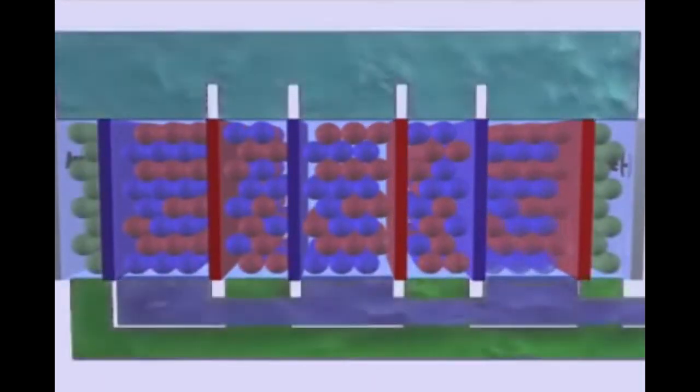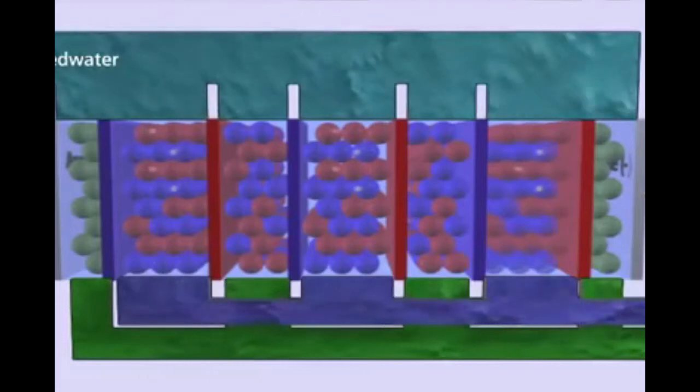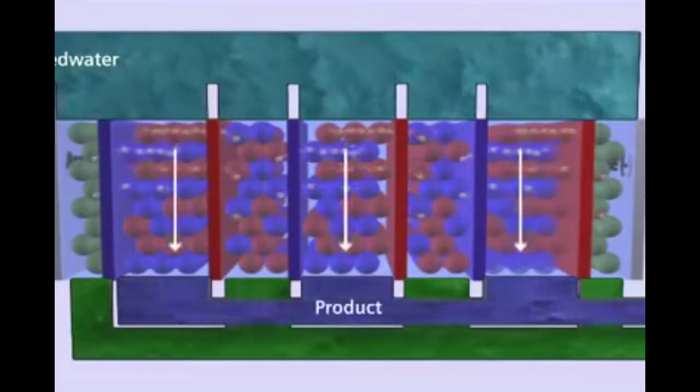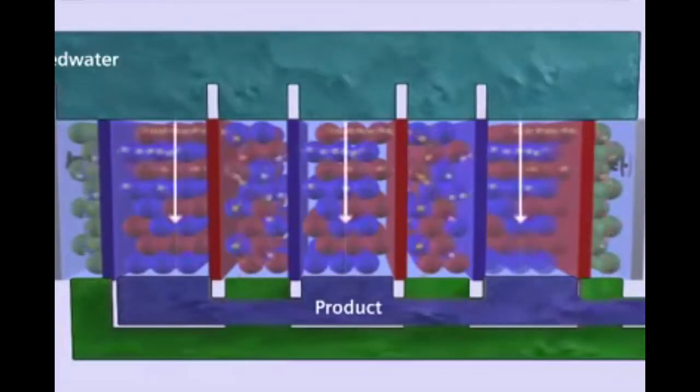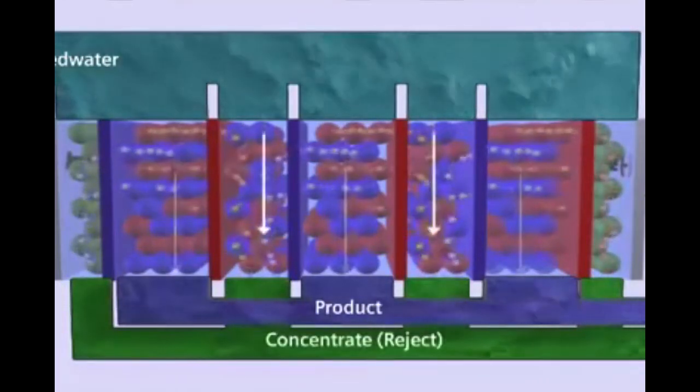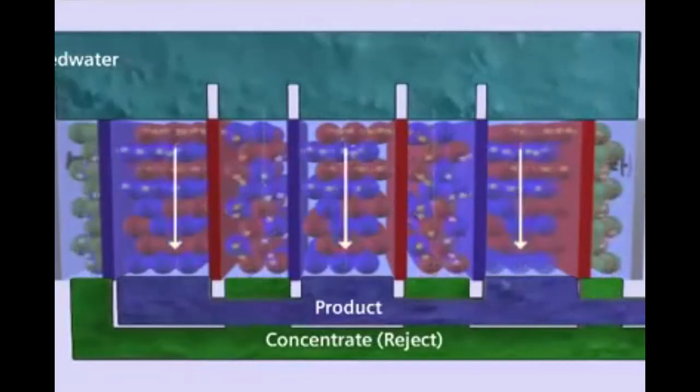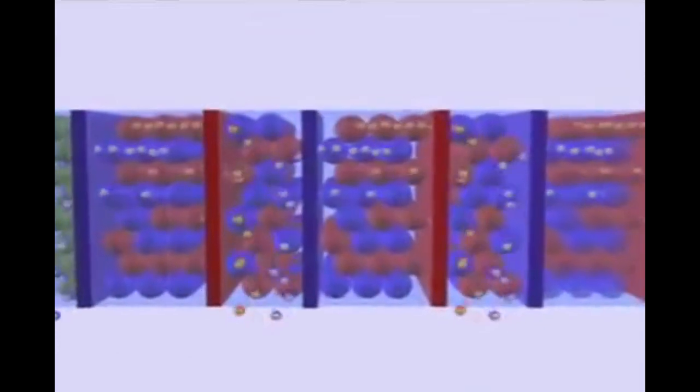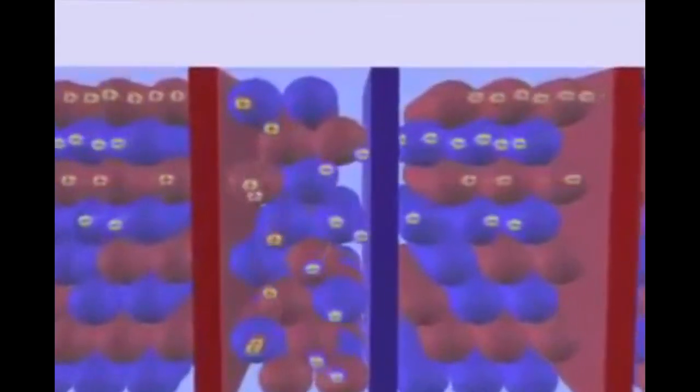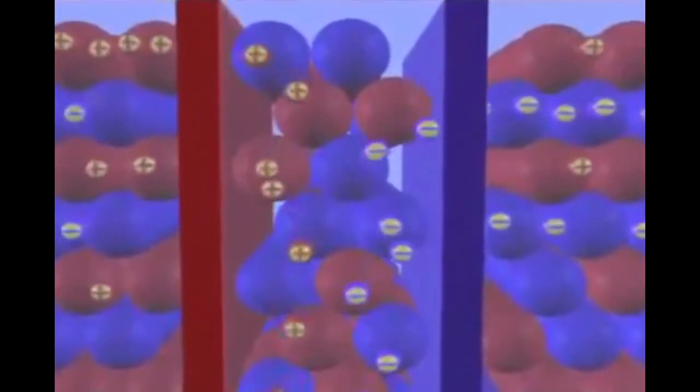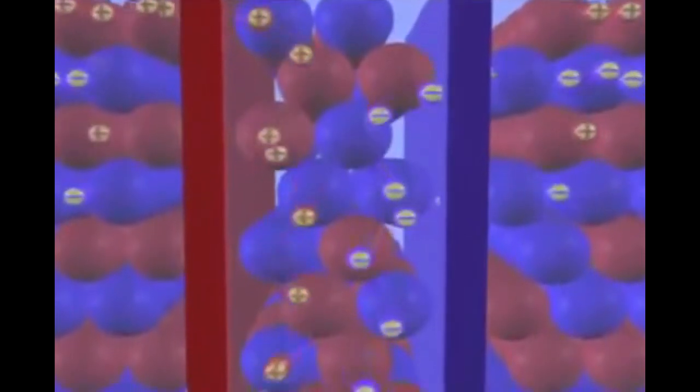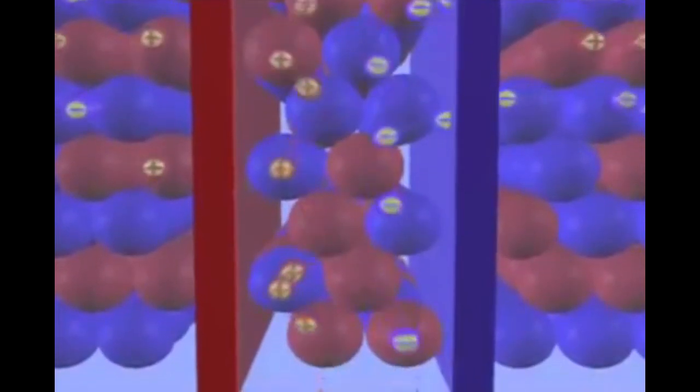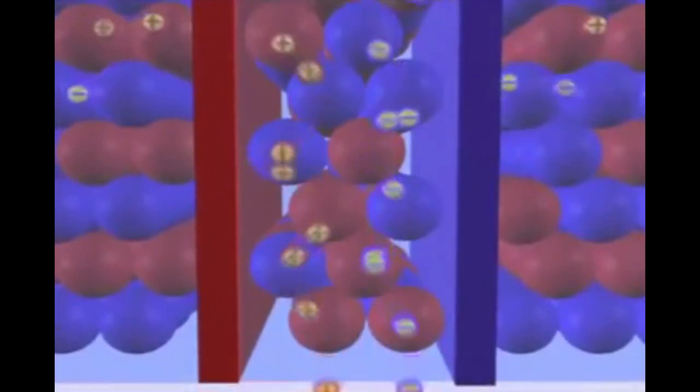As feed water is pumped into the system, it is diverted into separate compartments, mainly the concentrating compartment and the purification or dilute compartment. These water streams remain separated throughout the process because only ions can pass through the membranes. Ions migrate and accumulate in the concentrating compartments where they are washed away into the reject stream. The water leaving this compartment contains a concentration of ions approximately 10 to 20 times higher than the original feed water.